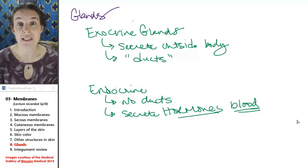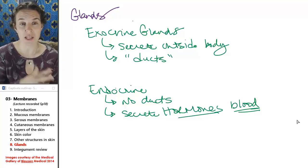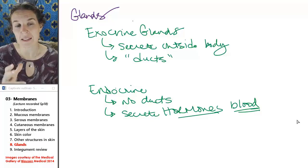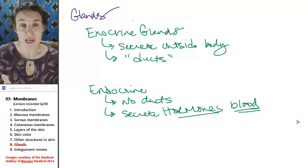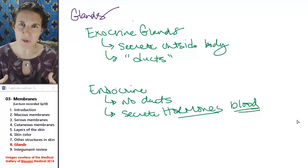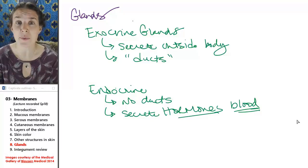There are two main kinds of glands that are found in your whole body, and glands are made of epithelial tissue because their primary purpose is secretion of something.